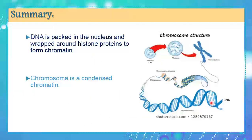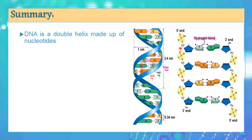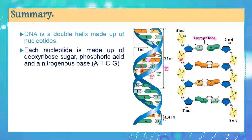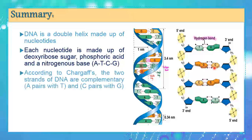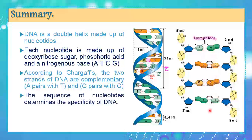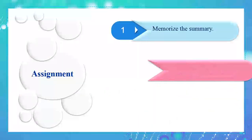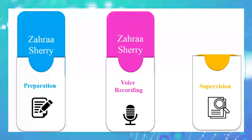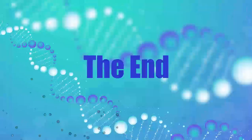In this video, you've learned that DNA is packed inside the nucleus with the help of histone protein, and that a chromosome is a condensed form of chromatin. DNA is a double helix made up of nucleotides, each containing phosphoric acid, deoxyribose sugar, and one of four nitrogenous bases. According to Chargaff, guanine always pairs with cytosine by three hydrogen bonds, and thymine always pairs with adenine by two hydrogen bonds, making the two strands complementary. The sequence of nucleotides determines the specificity of the individual. As an assignment, please memorize the summary sheet and solve the extra sheet.